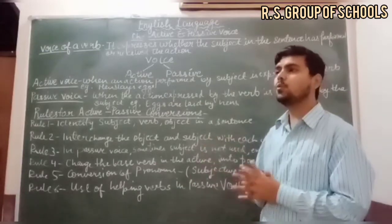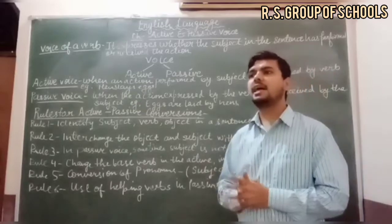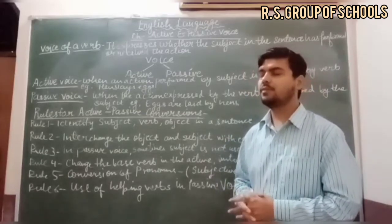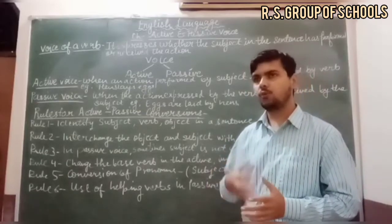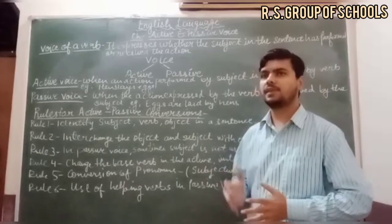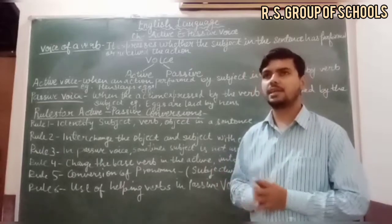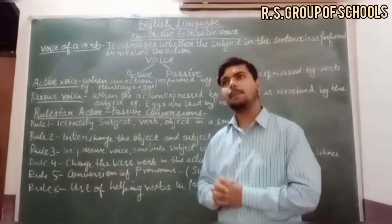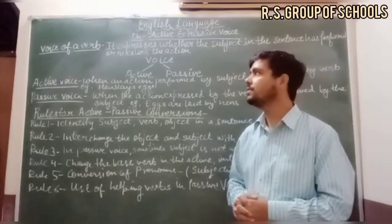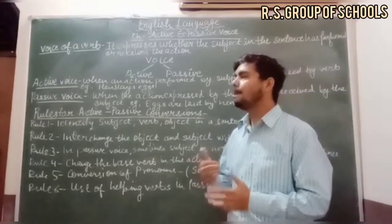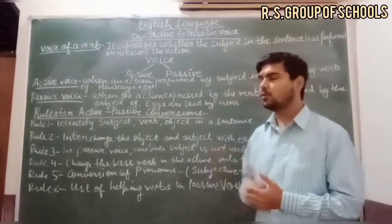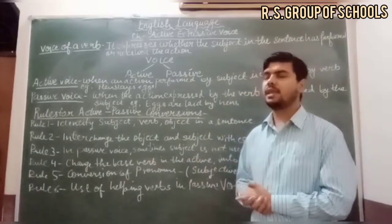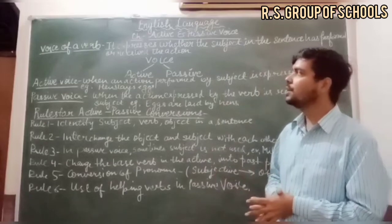There are two types of voices in a sentence, known as active voice and passive voice. Active voice and passive voice are two types of voice. We have two types of sentences: active sentence and passive sentence.